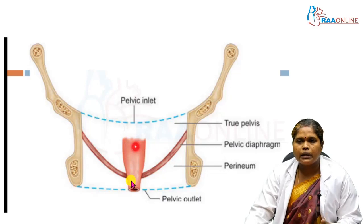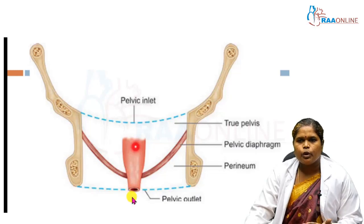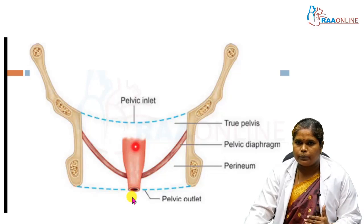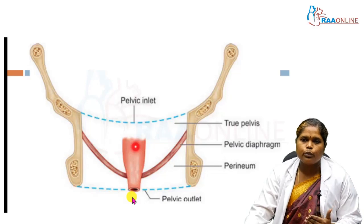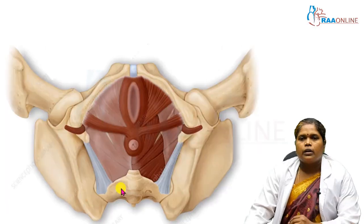In the perineum again we will have male and female perineum. In females we will have the urethral opening and vaginal opening, and in males we only have the urethral opening. So perineum is the region below the pelvic diaphragm.